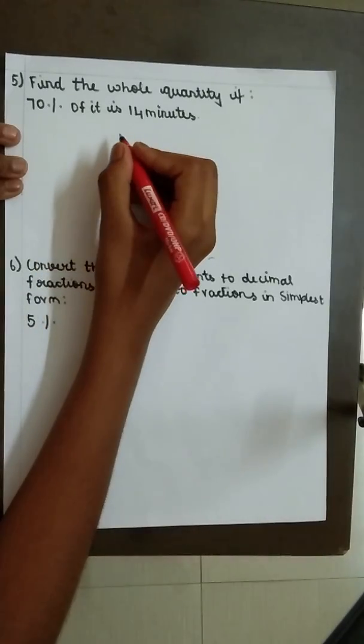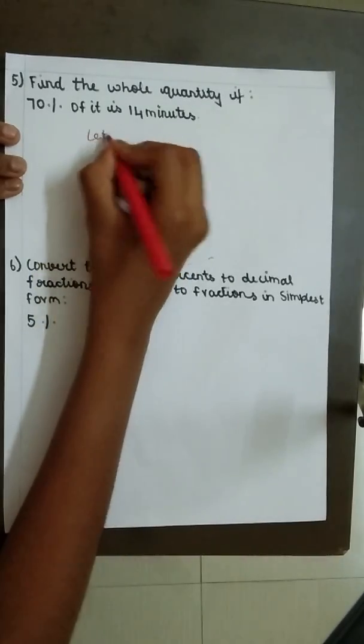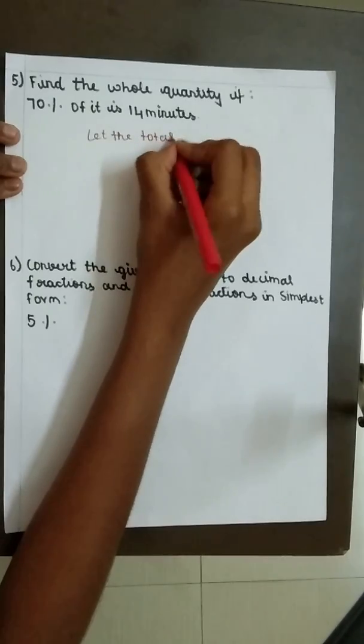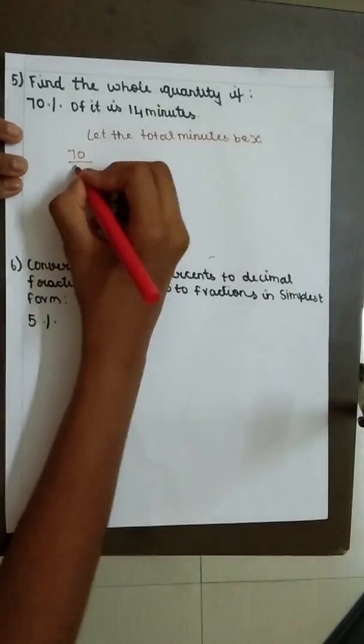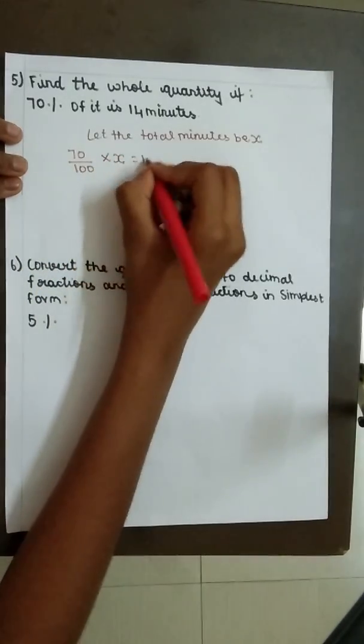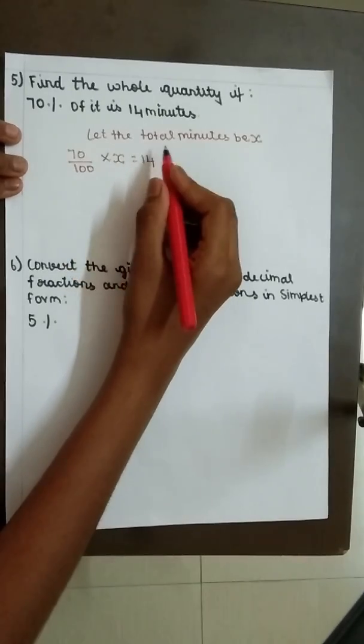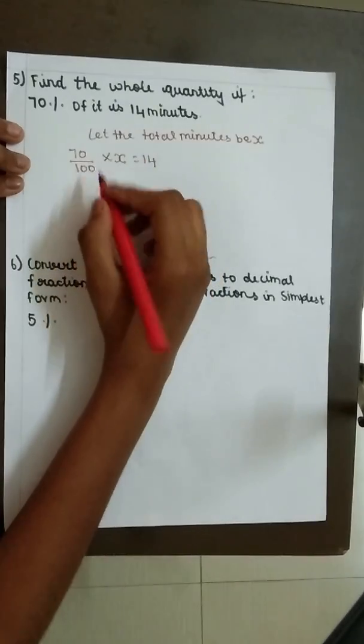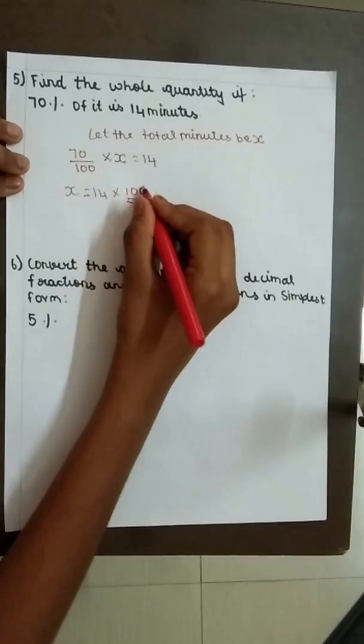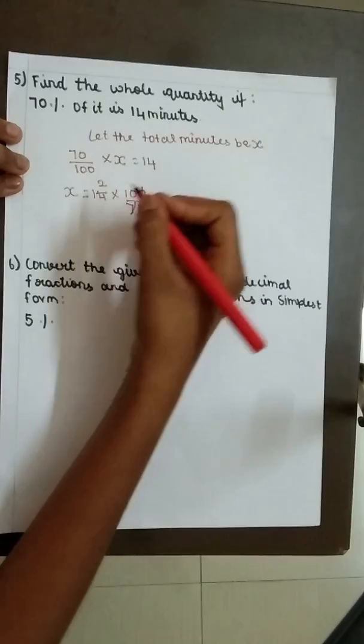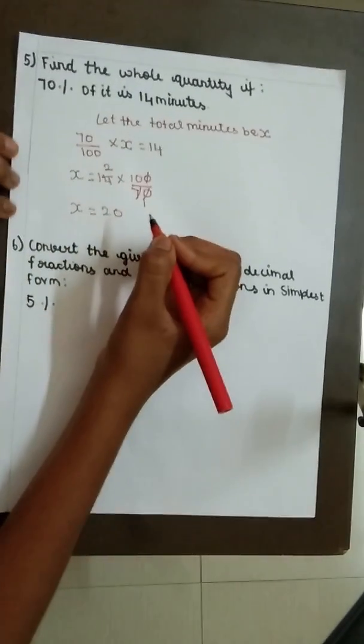Question number 5. Find the whole quantity if 70% of it is 14 minutes. Let the total minutes be x. 70 by 100 into x equal to 14. While 70 by 100 changes after equal to, it will change into 100 by 70. So x equal to 14 into 100 by 70. 100s get cancelled. 7 one time, 14 two times, 2 into 10 is 20. Therefore, x equal to 20 minutes.